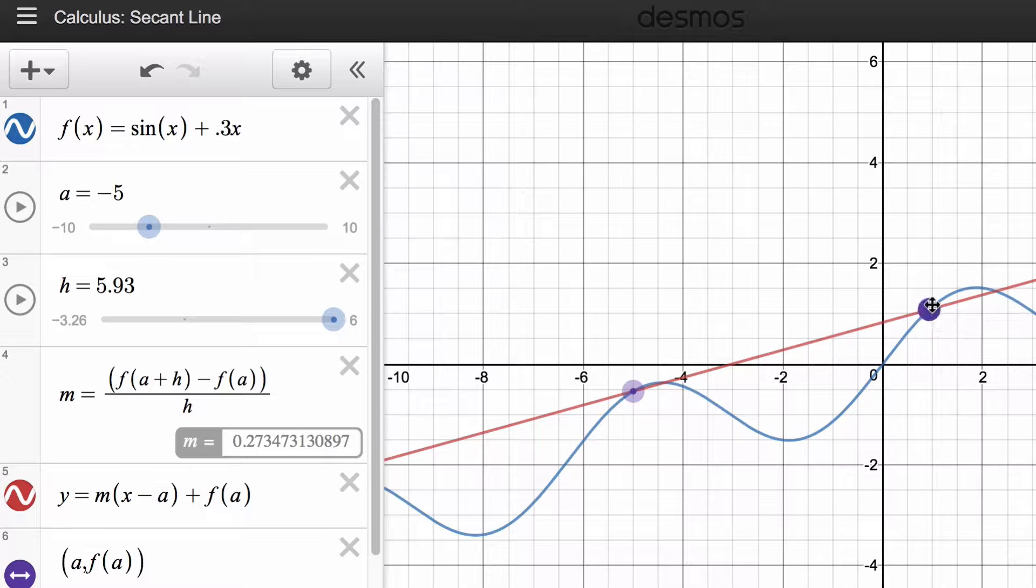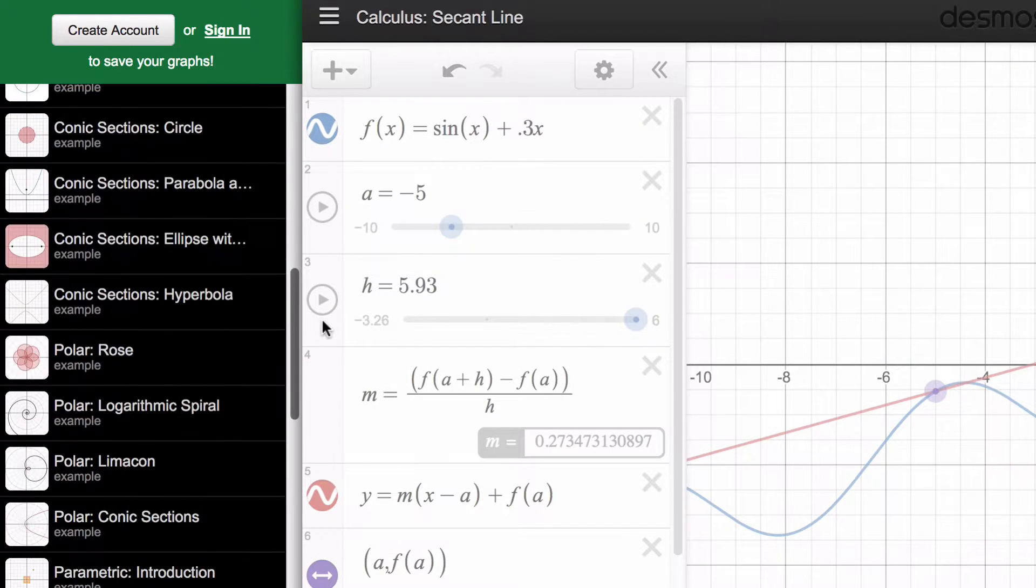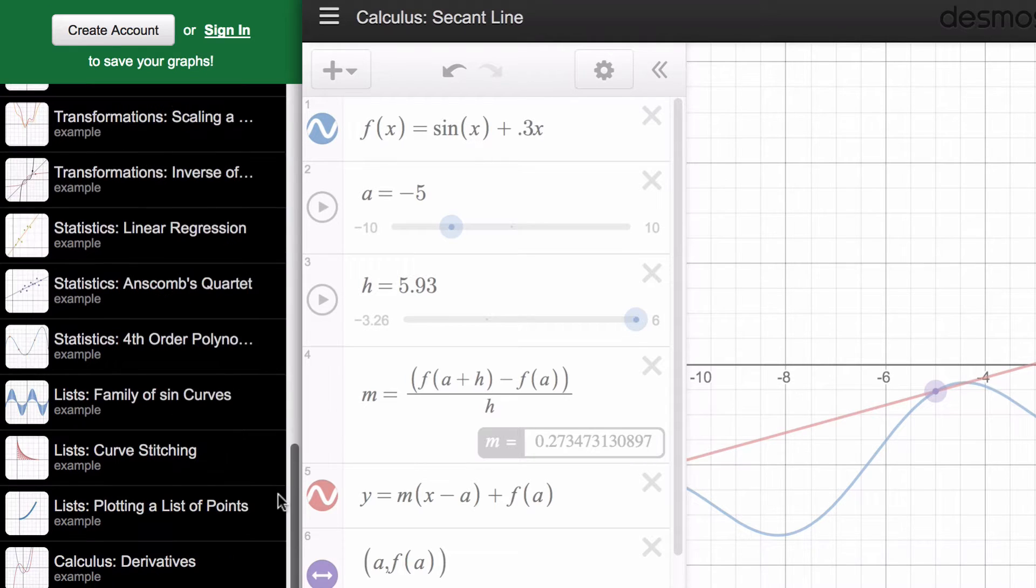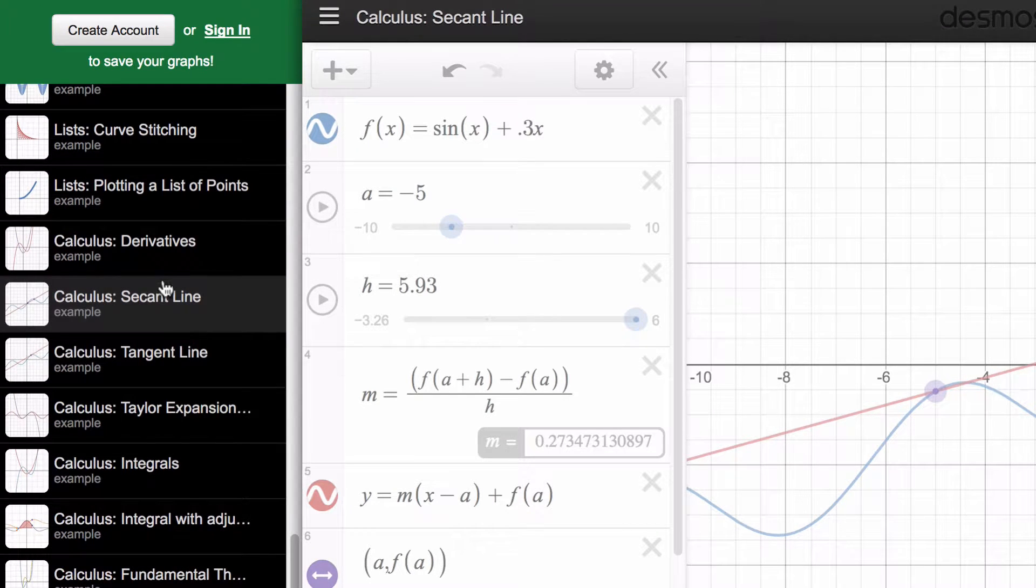If we have average rate of change, this example in Desmos is called a secant line. By the way, if you click on these three horizontal lines, you'll see examples in trigonometry, algebra, and calculus. Down here is what will be interesting for us: derivative, secant line, tangent line.